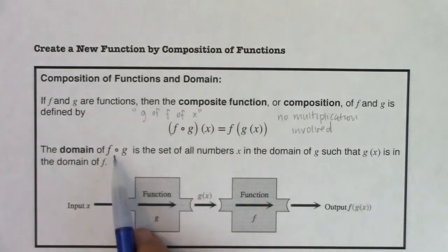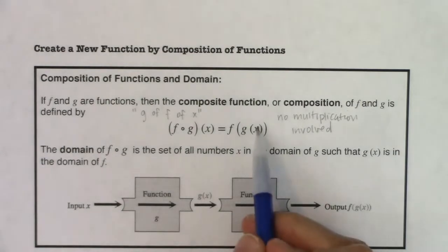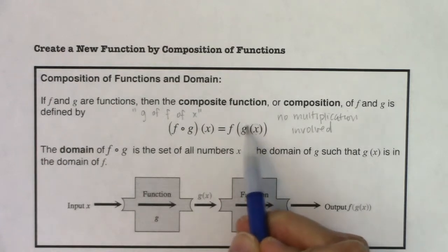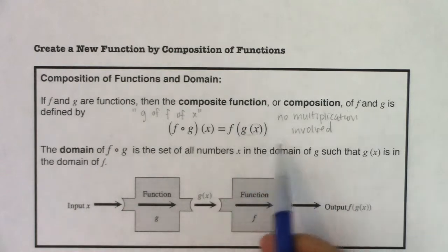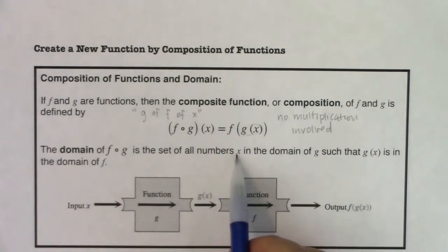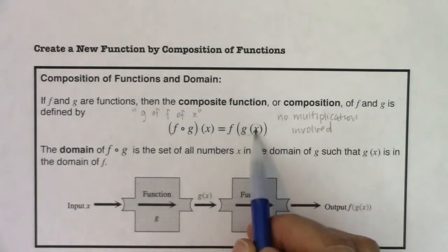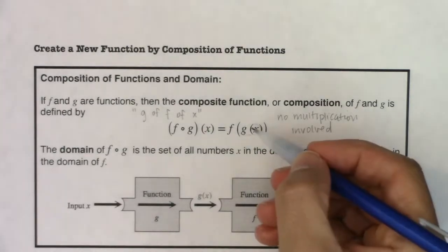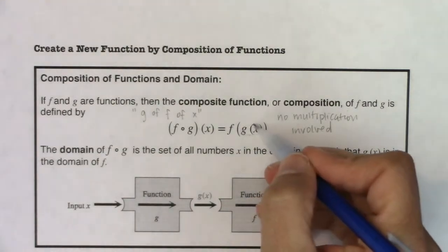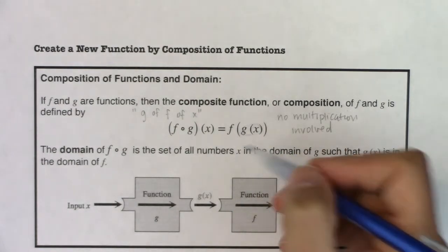Now the domain of this function is the set of all numbers x in the domain of g — so in the domain of your innermost function. We're always going to look at the innermost function first. The domain of f of g is the set of all numbers x in the domain of g such that g of x is in the domain of f. We will work ourselves out — start with g of x, figure out what its domain is, and then apply that and see what's viable with f of x.